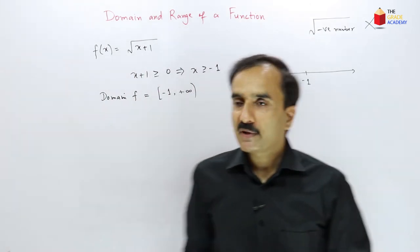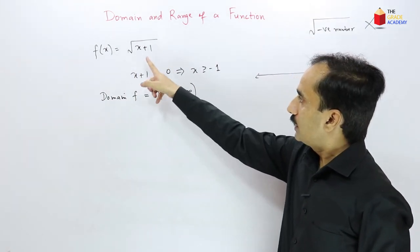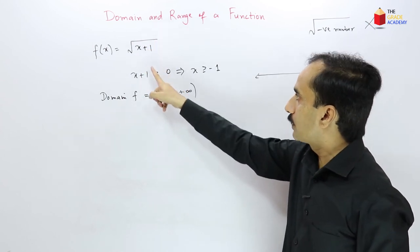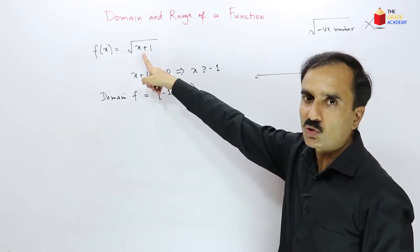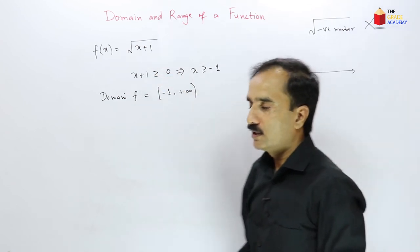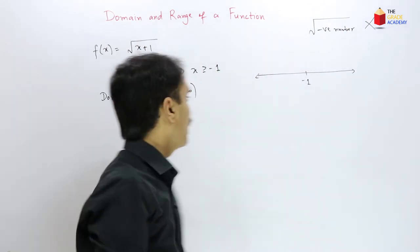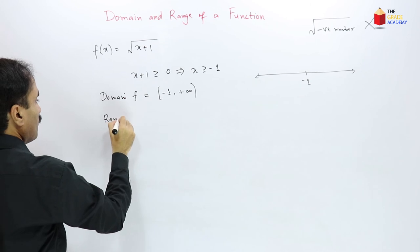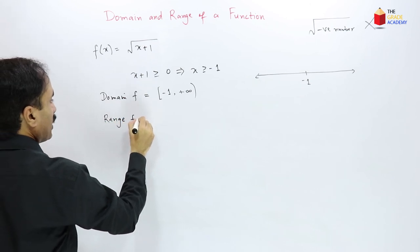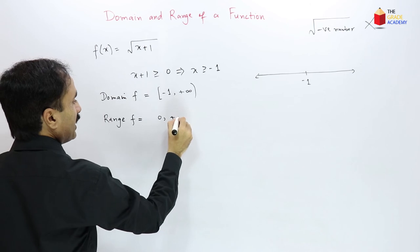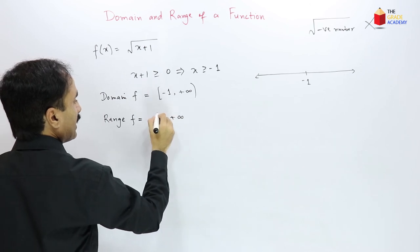For the range: when x = −1, the square root gives 0; otherwise it is always positive. So the range of f(x) = √(x+1) is [0, +∞), including zero.